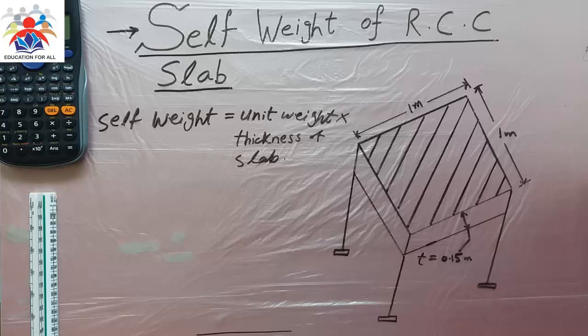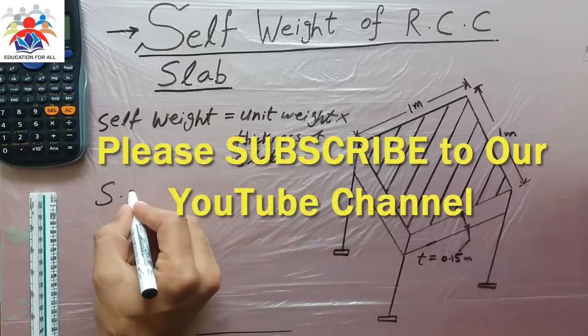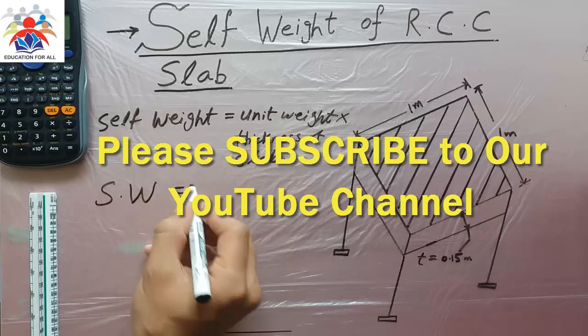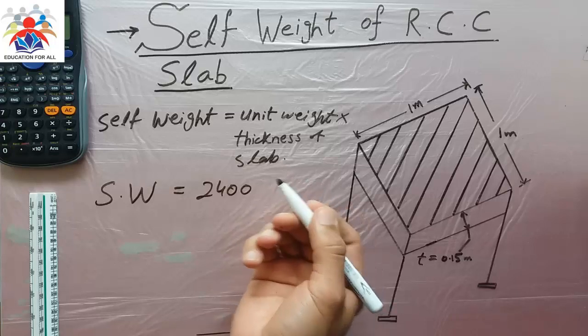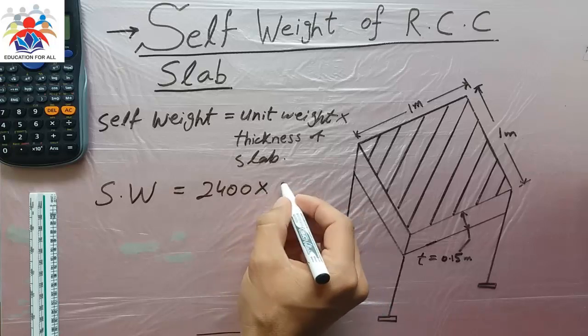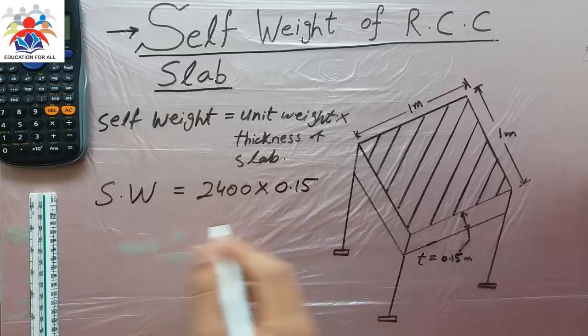The self-weight is equal to unit weight, which is 2400, multiplied by thickness, which is 0.15.